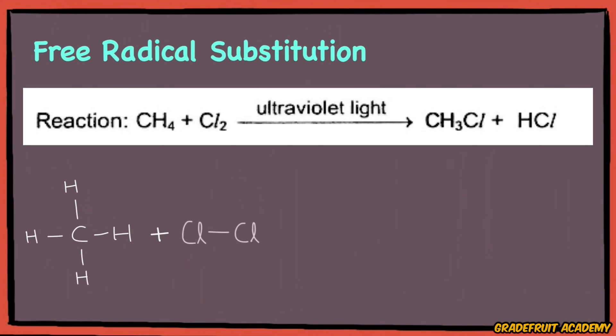From this equation, you can see that a hydrogen atom in the alkane has been swapped out or substituted with a chlorine atom from the chlorine molecule, likewise creating a byproduct as a result.